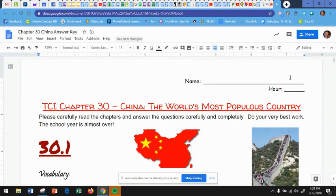Hello 7th graders, it's now time to go over parts of TCI chapter 30 about China, the world's most populous country. We're going to go over sections 1, 2, and 3 only, and then you are going to use that to help you to correct your answers on your packet. So please pause the video as necessary to check your answers to make sure they are correct.